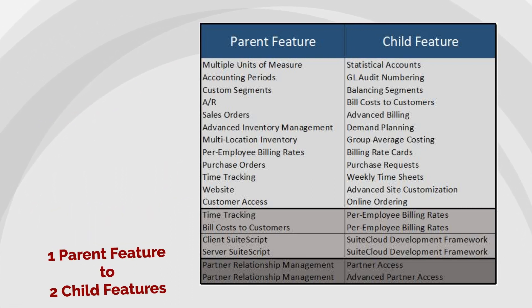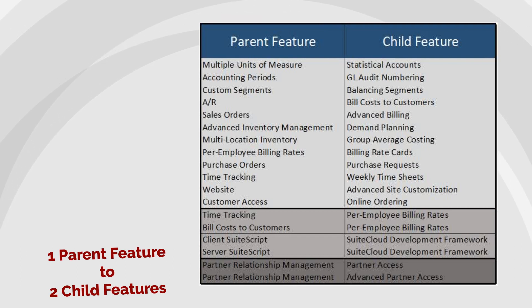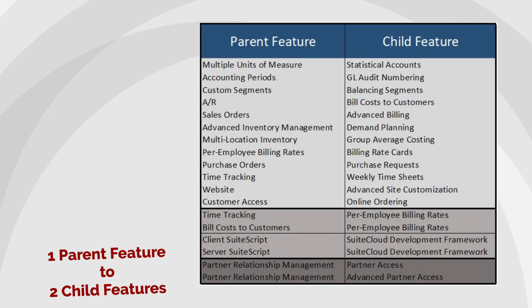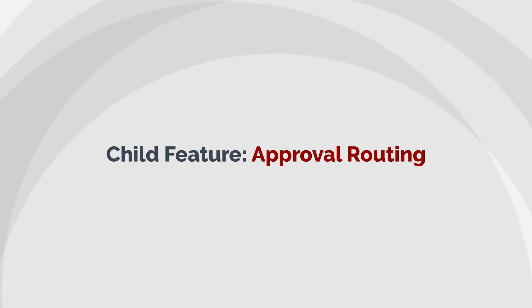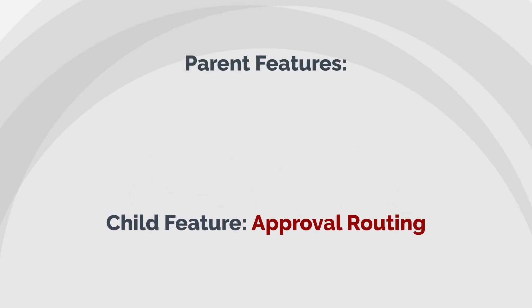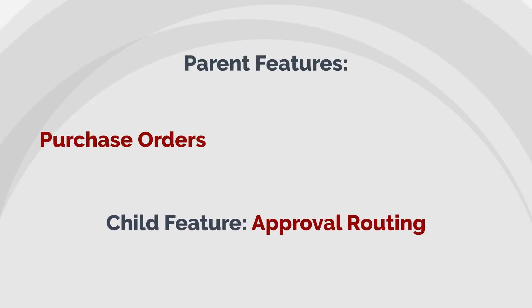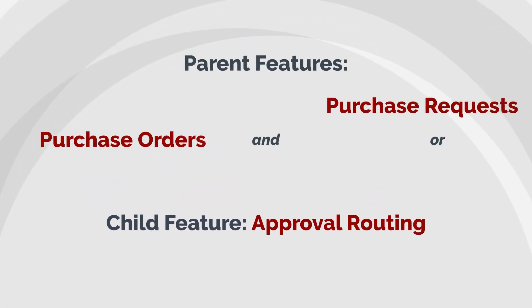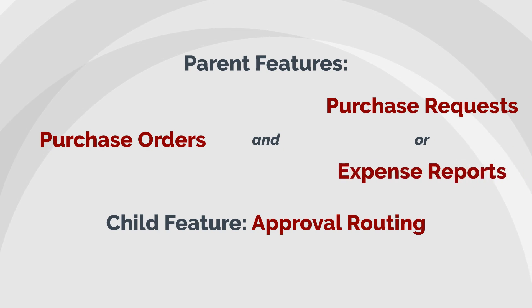On the other hand, notice that the parent feature Partner Relationship Management supports two child features. Another interesting parent-child feature relationship not on the chart is with the child feature Approval Routing. In order to use Approval Routing, you would need to enable both Purchase Orders and either Purchase Requests or Expense Reports.